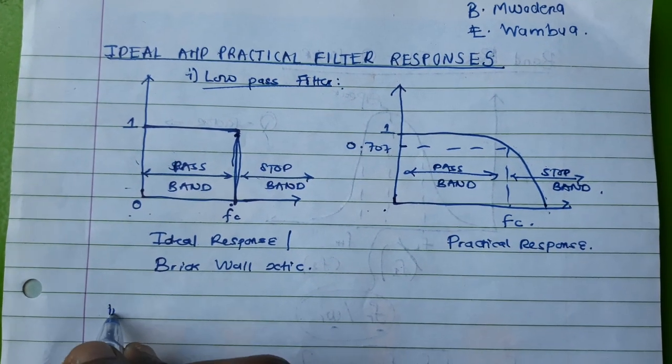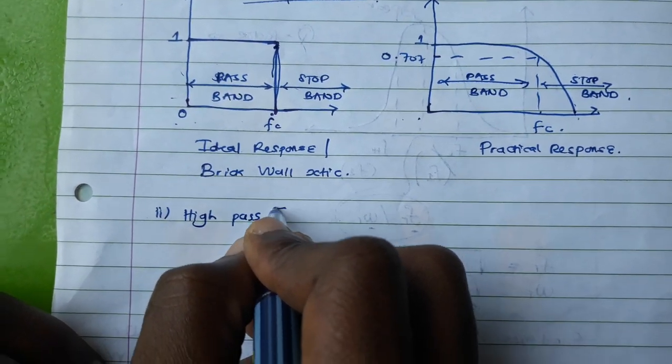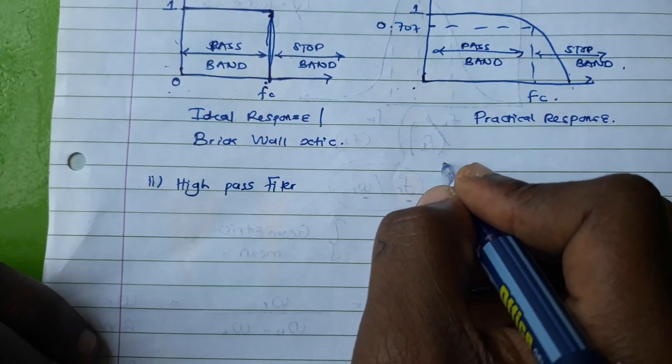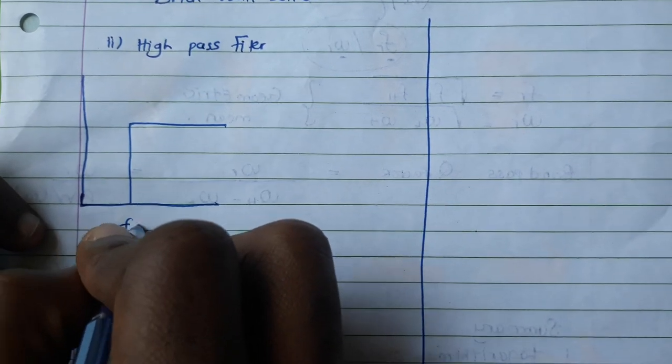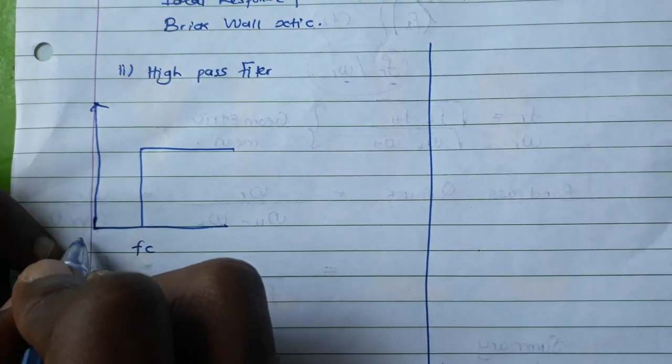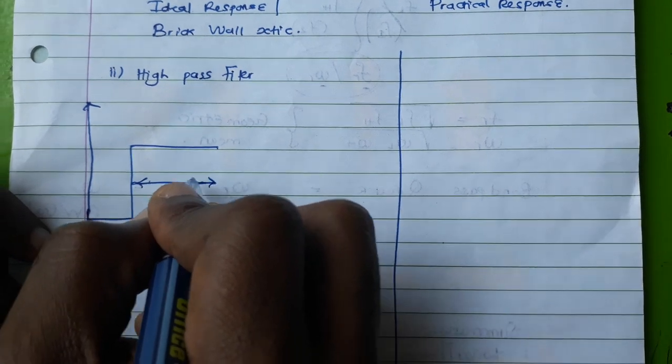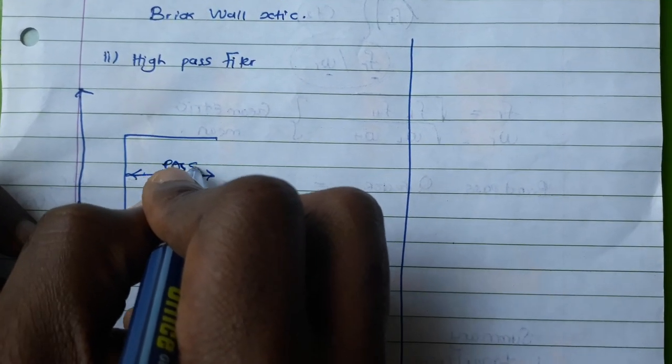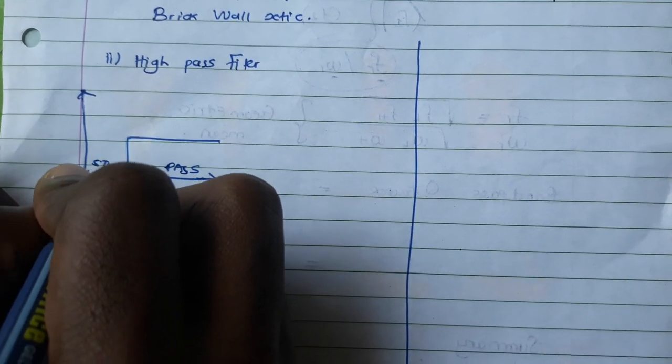Now let's look at the high-pass filter. The ideal characteristics of high-pass filter is that way. So this is fc, this is 0, and this is the passband region, and this is the stopband region.